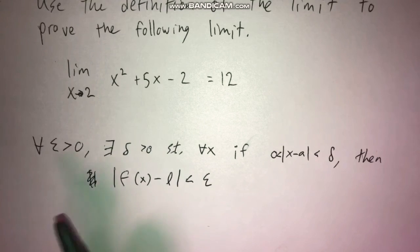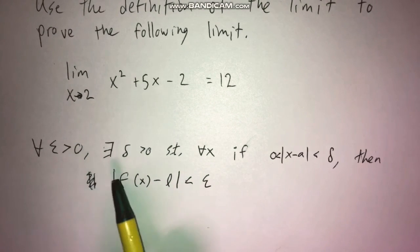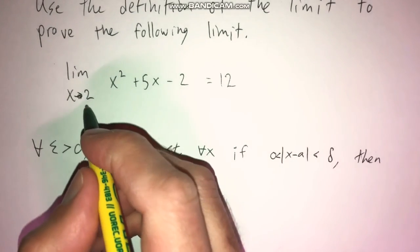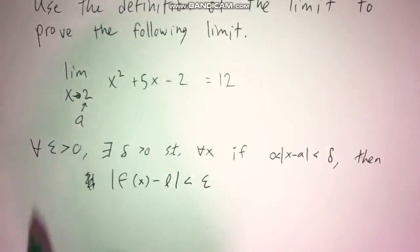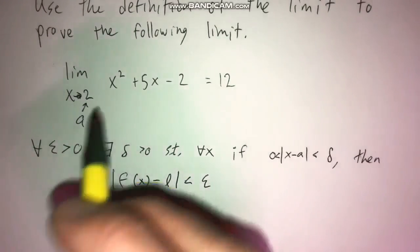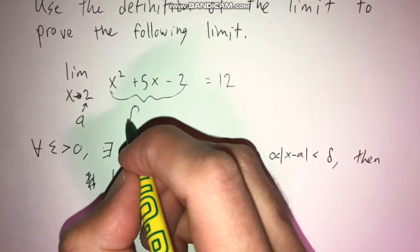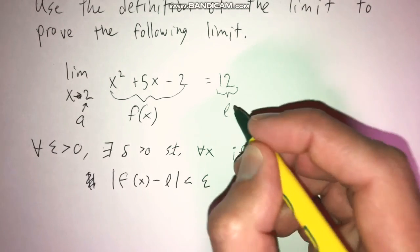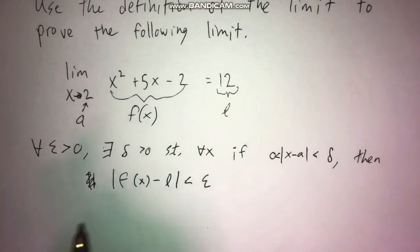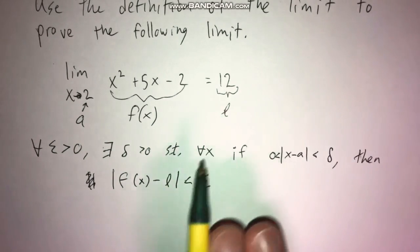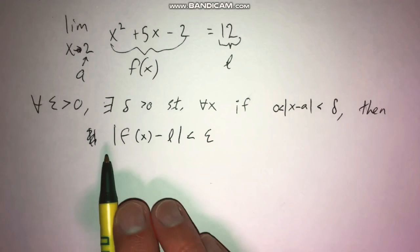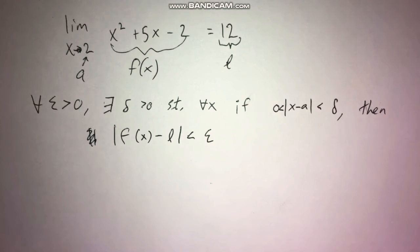Let's think about each of these pieces coming back to this limit. Our a is going to be the value that x is approaching — so this right here is our a. This right here is our f of x, the function we're taking the limit of. And this over here is our L, which is what the limit is equal to. What we want to do is start from the end and work our way backwards, and I'll show you why that ends up helping us.